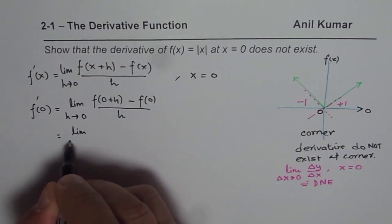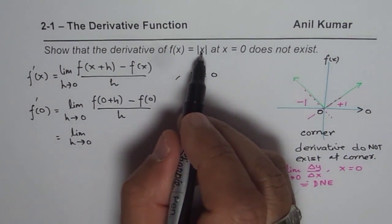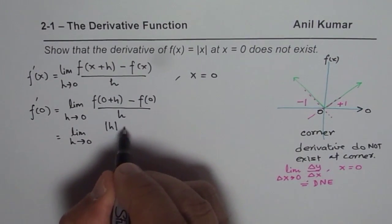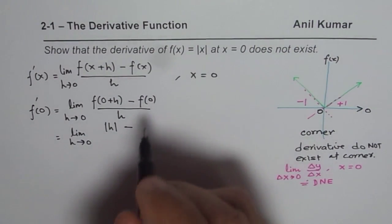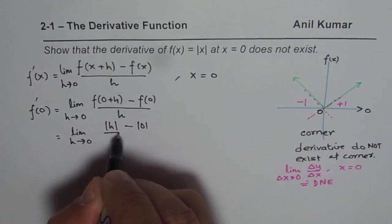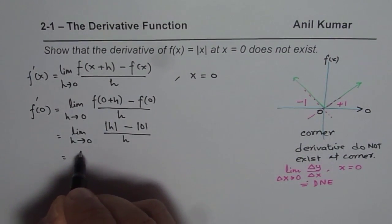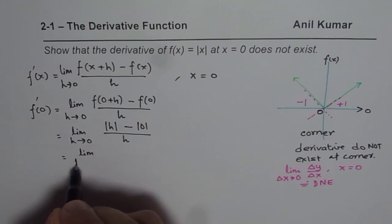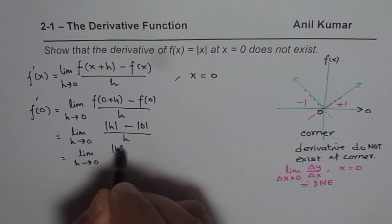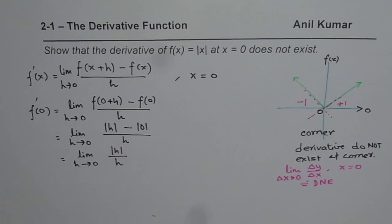Now the function is absolute x, so we can write this as the limit as h approaches 0 of absolute value of 0 plus h, which is absolute h, minus the absolute value of 0, all divided by h. That simplifies to the limit as h approaches 0 of absolute h over h. That is the expression we get for the derivative at x equals to 0.